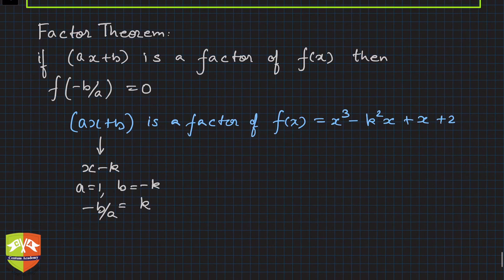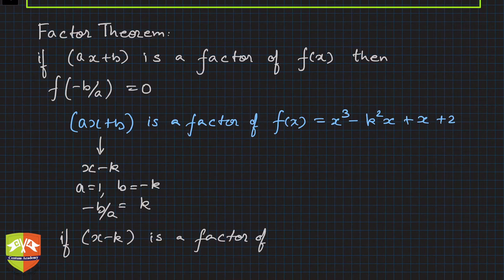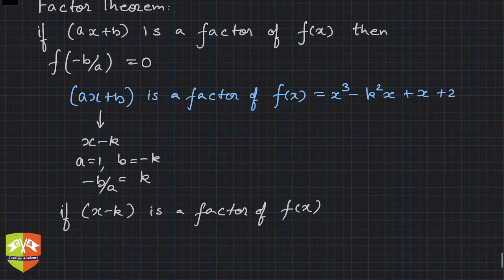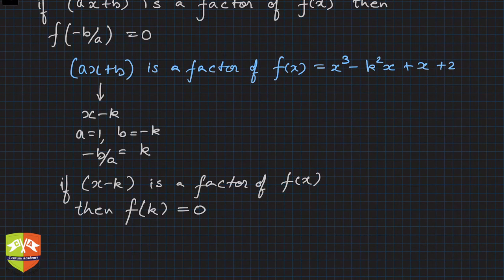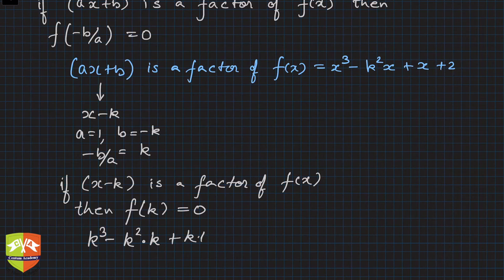So if x minus k is a factor of f(x), then f of k must be equal to 0. Let's find f of k: replace x by k, so we get k cube minus k squared times k plus k plus 2 must equal 0.